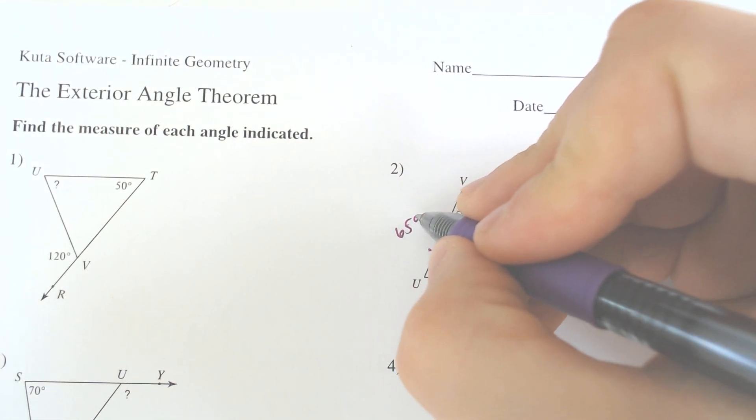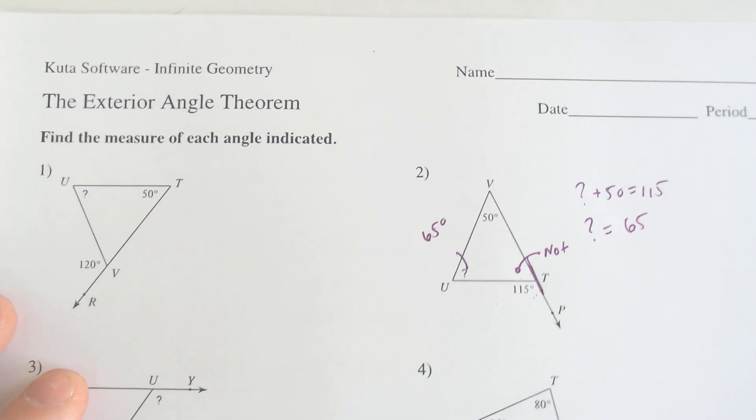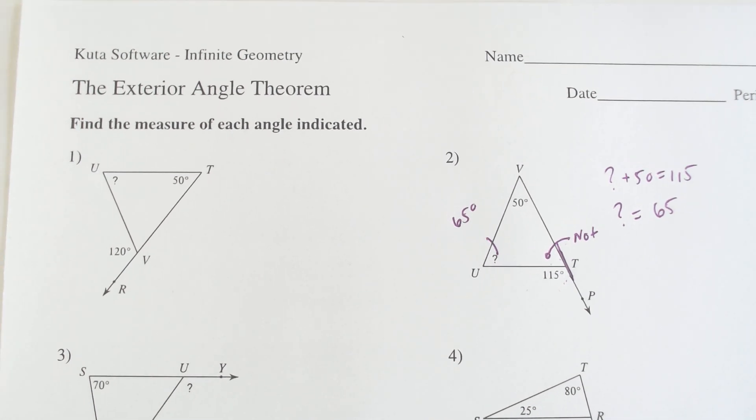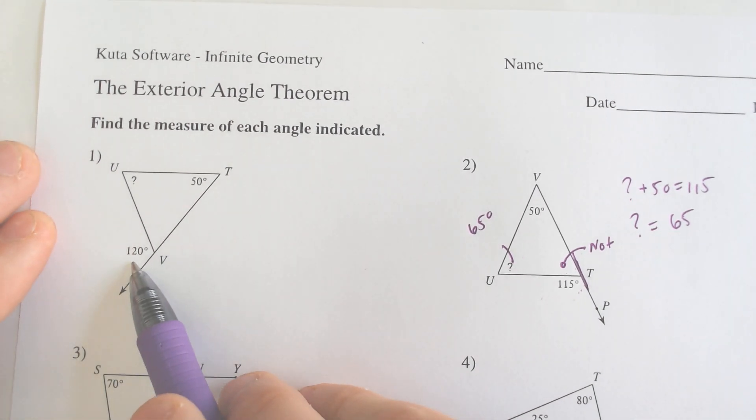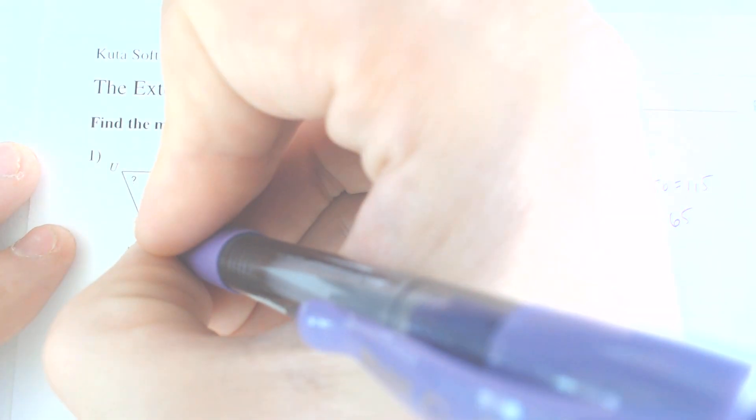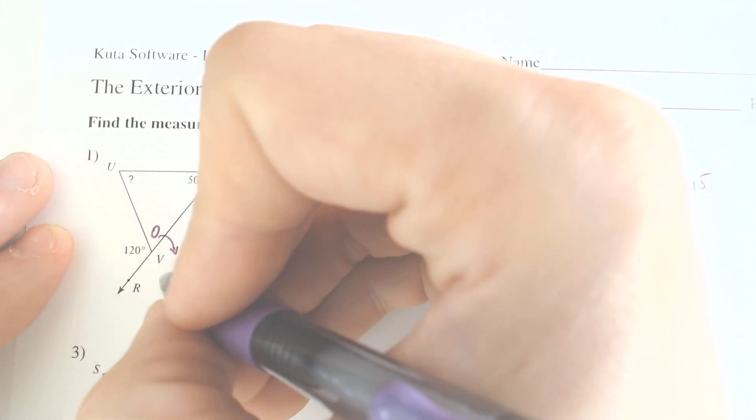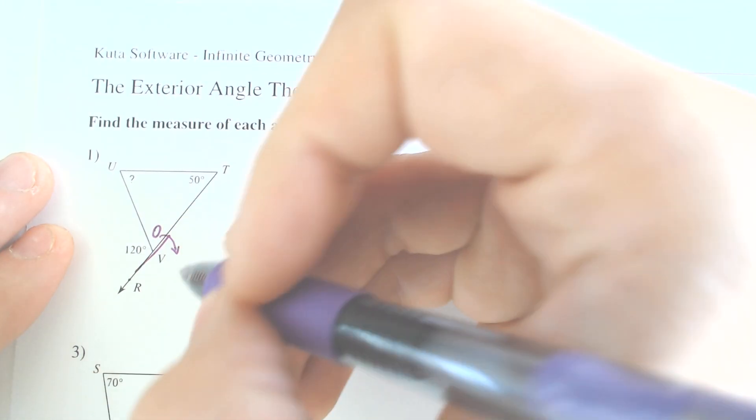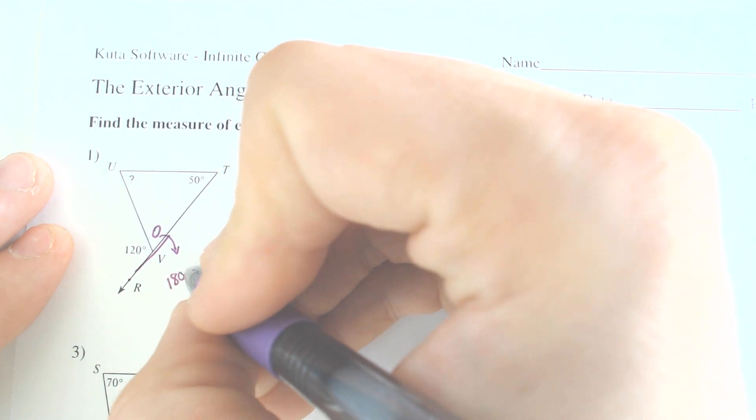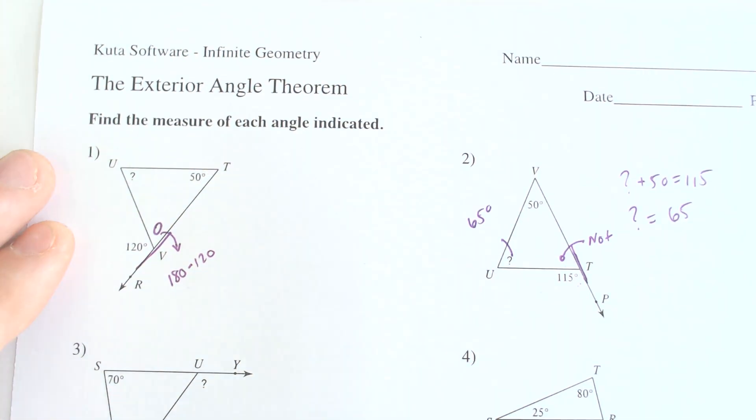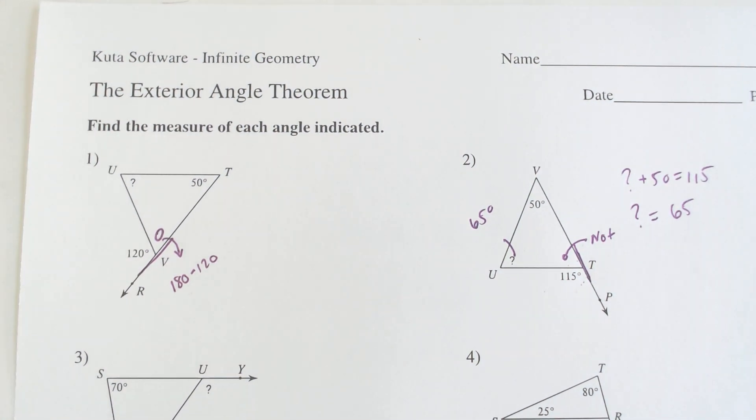Now I'm going to prove to you why it works in a moment. If we wanted to figure out this angle right here, that would be a linear pair with the 120. So this would be 180 minus 120 which is 60.